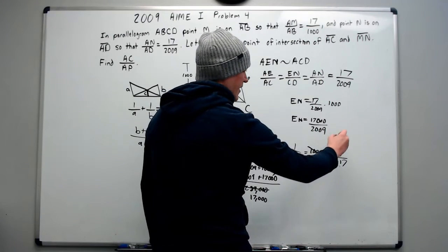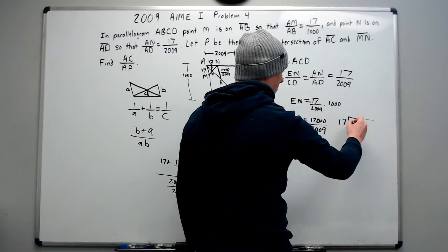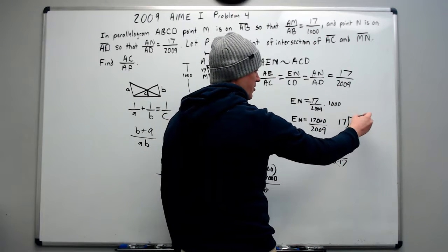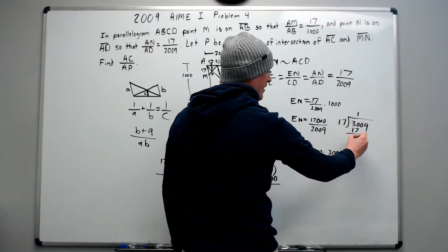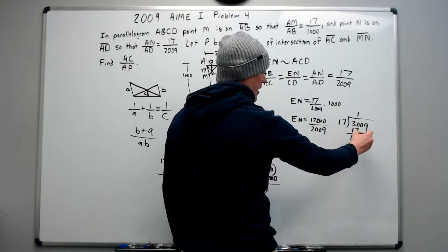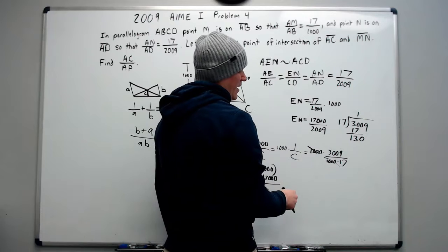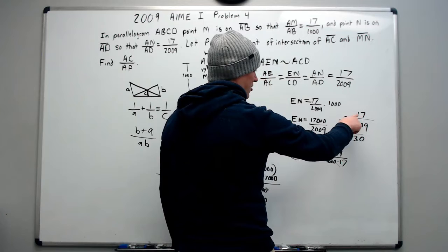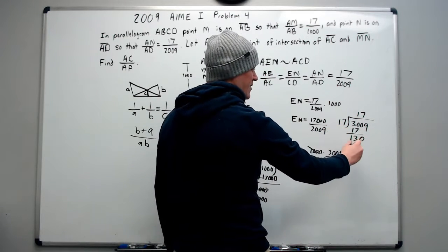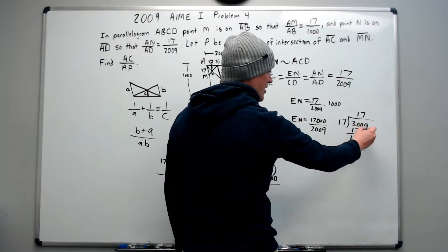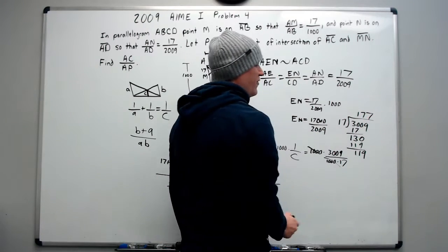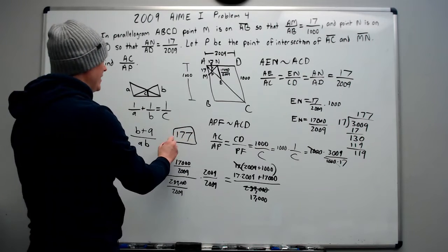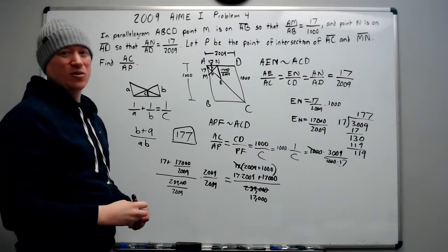And again, 1 over C is this expression. The 17's canceled. 2009 plus 1000 is 3009 over 17,000, which I'm going to write as 1000 times 17. And why have I done that? So that the 1000's cancel. Then I'm going to just do the division. And we're going to do it old school. So 17 goes into 3030 one time. You get 17, leaving 13. Drop the 0. 17's going to go into there 7 times. 7 times 17 is 119, leaving 11 and dropping the 9. And perfect. It goes in 7 times. And that is the answer because it is AC over AP: 177.